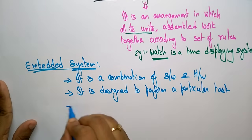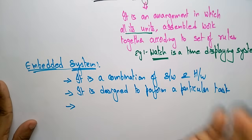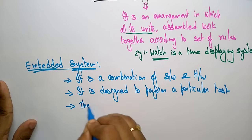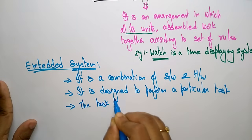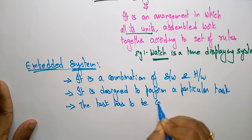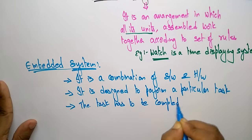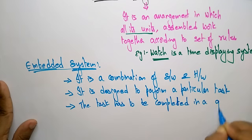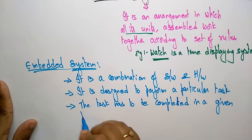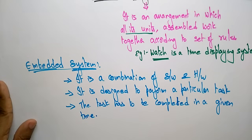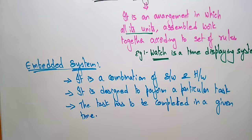The third constraint is that the task has to be completed in a given time. So whatever task is taken, that task has to be completed within a given time. That is what we call an embedded system. The definition: an embedded system is a combination of software and hardware which is designed to perform a particular task that has to be completed within a given time.